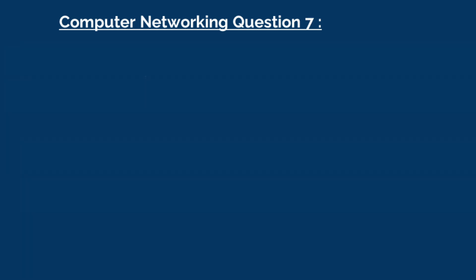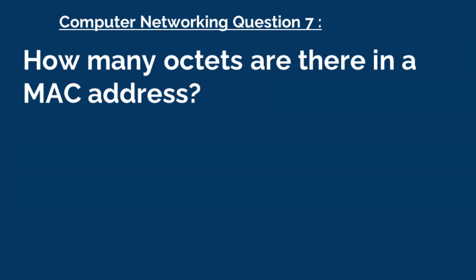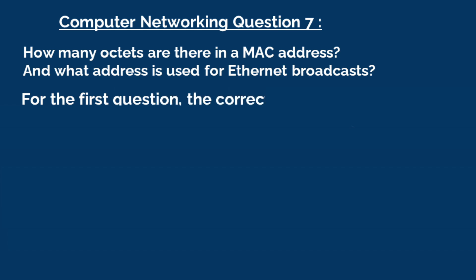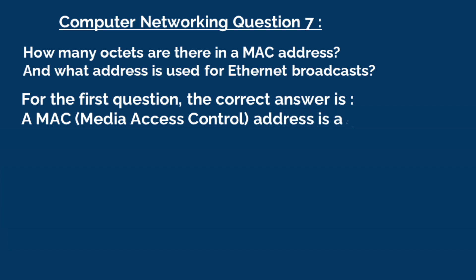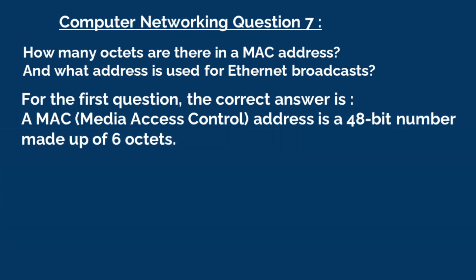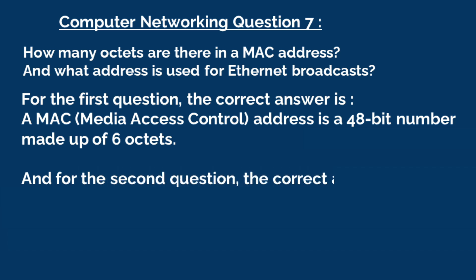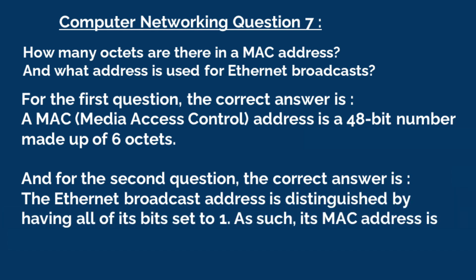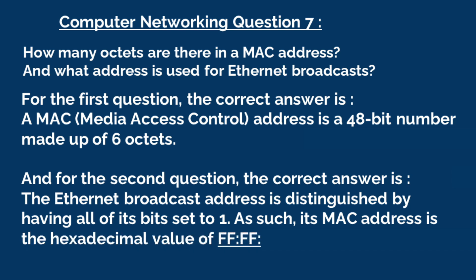Question 7: How many octets are there in a MAC address, and what address is used for Ethernet broadcasts? For the first question, the correct answer is, a MAC (media access control) address is a 48-bit number made up of 6 octets. For the second question, the correct answer is, the Ethernet broadcast address is distinguished by having all of its bits set to 1. As such, its MAC address is the hexadecimal value of FF:FF:FF:FF:FF:FF.